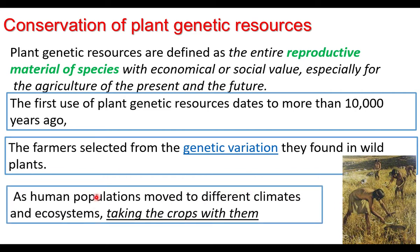When human populations moved to different climates and ecosystems, they took the crops with them. When they moved from one place to another, they took the selected crops with them. They started conserving the plants for their future.